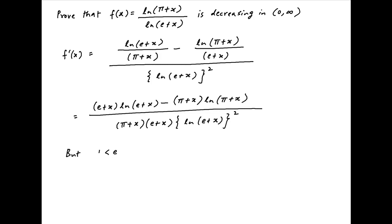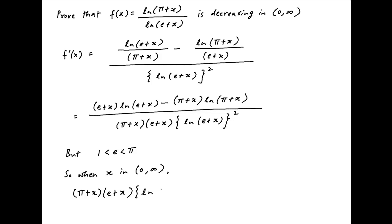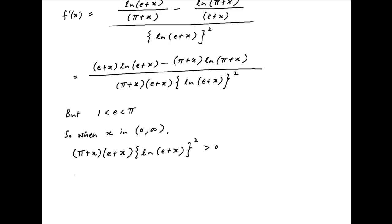Note that e, approximately 2.7, is less than π, approximately 3.1. So when x lies in the interval 0 to infinity, we can say a couple of things. First, (π+x), which is positive, times (e+x), which is positive, times [ln(e+x)]², which is also positive — the product of these three numbers will be greater than zero.